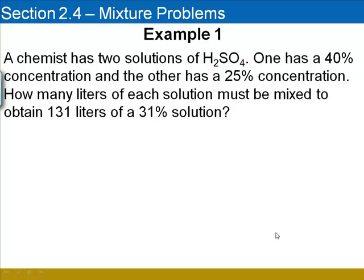In our first example, a chemist has two solutions of H2SO4. One has a 40% concentration and the other has a 25% concentration. How many liters of each solution must be mixed to obtain 131 liters of a 31% solution?